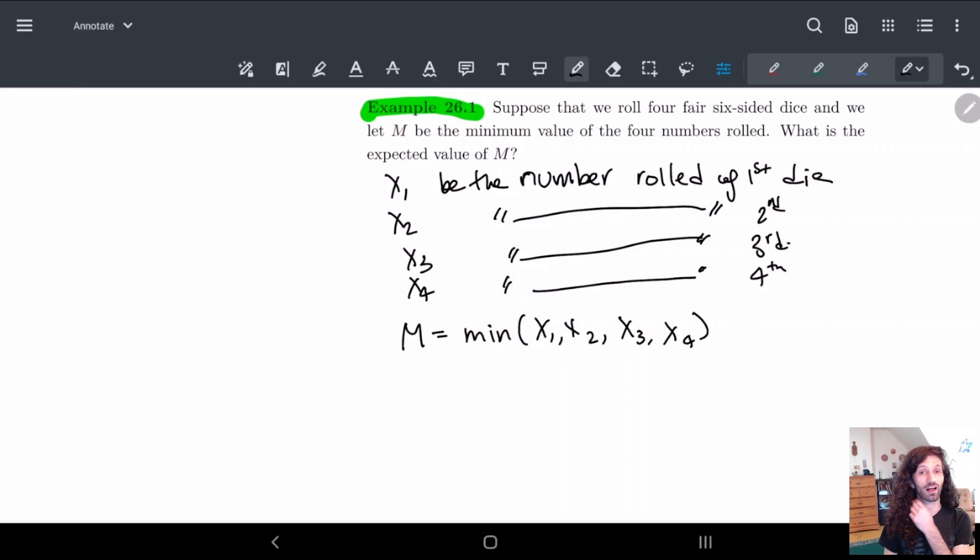And then we're letting M be the minimum of these four: X1, X2, X3, X4. And we're asking what the expected value of M is. So let's first look at both different ways of doing this, the original way and the tail formula way, to kind of figure out why one way is better than another.